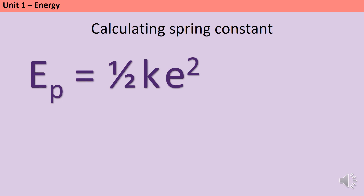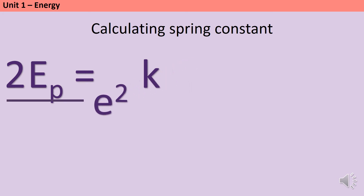As with other equations in this topic, you need to be able to rearrange the elastic potential energy equation to make any term the subject. With elastic potential energy there are more complex terms — it's not just multiplying numbers together. To make spring constant k the subject: first multiply everything by two to remove the half, giving 2E = ke². Then divide both sides by e² so that k = 2E / e². The spring constant equals two times the elastic potential energy divided by the extension squared.